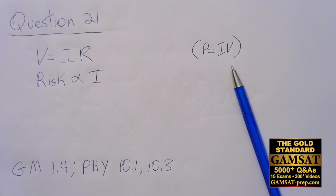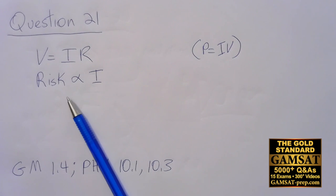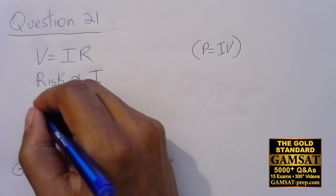What did we learn in the question stem? It teaches us that risk is proportional to the current. We're given a table with voltage and resistance, so we just need to solve for current and then compare the current in the two different circumstances.